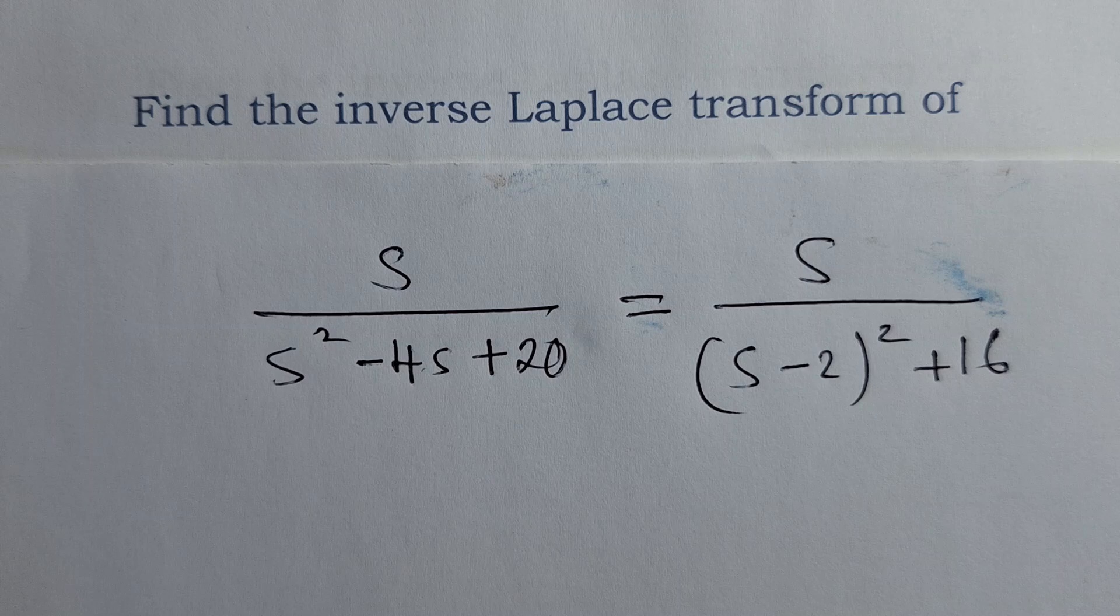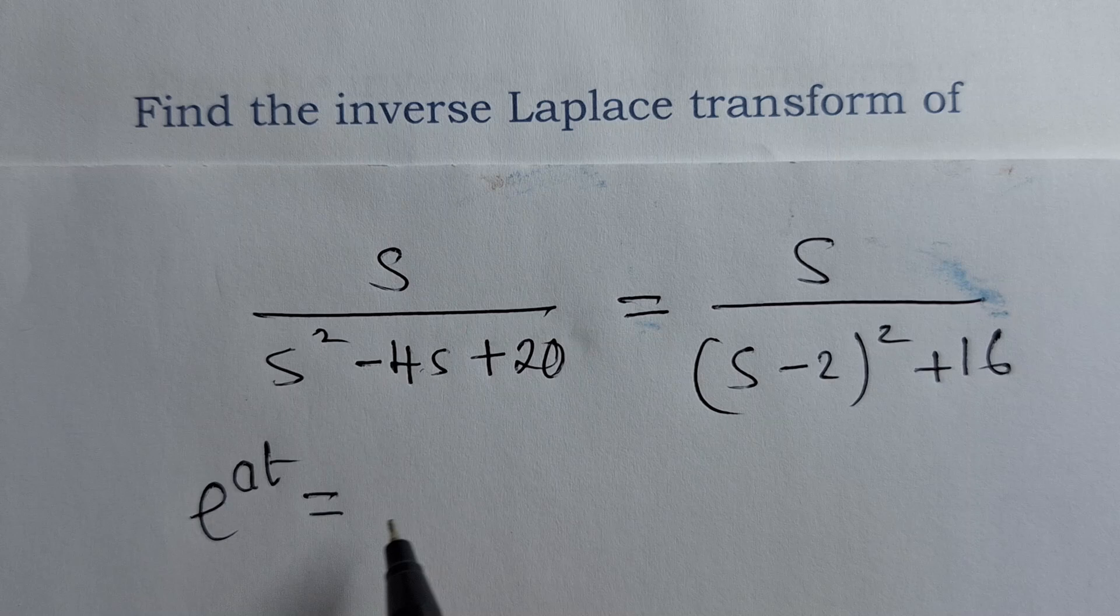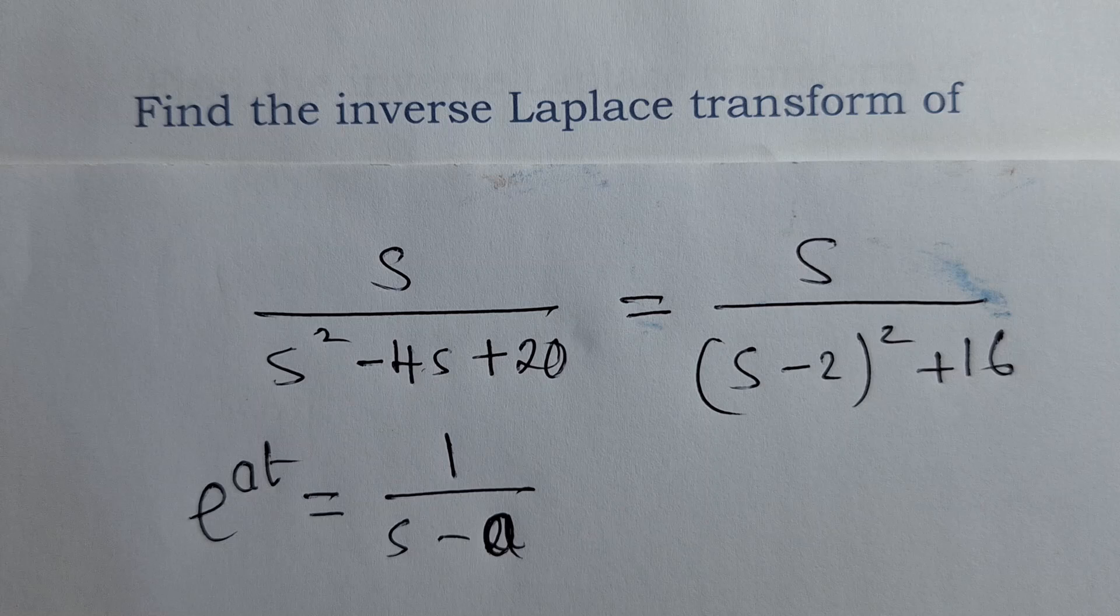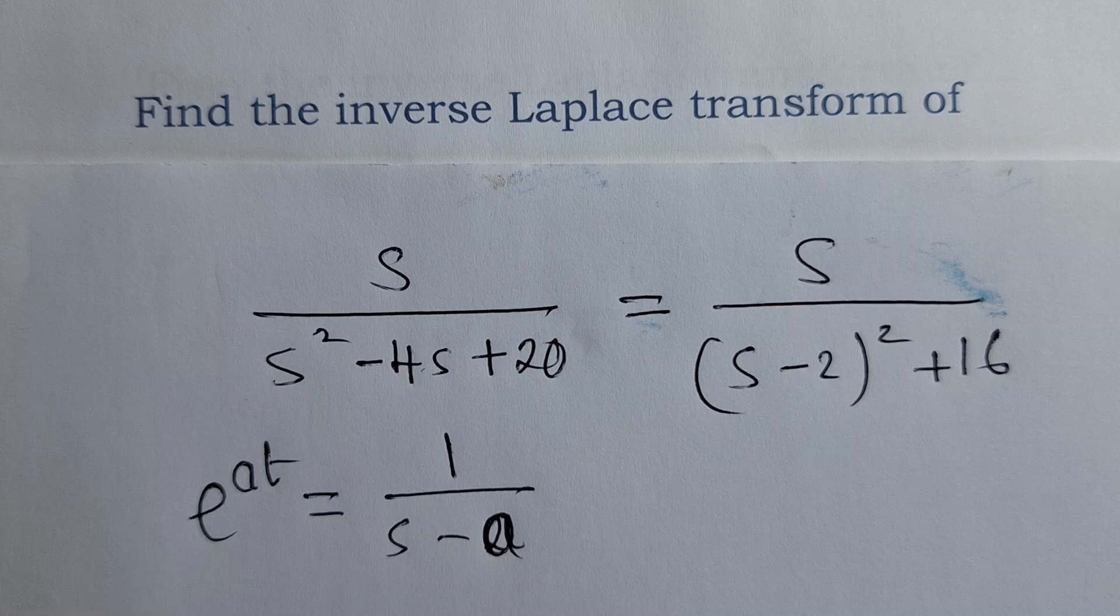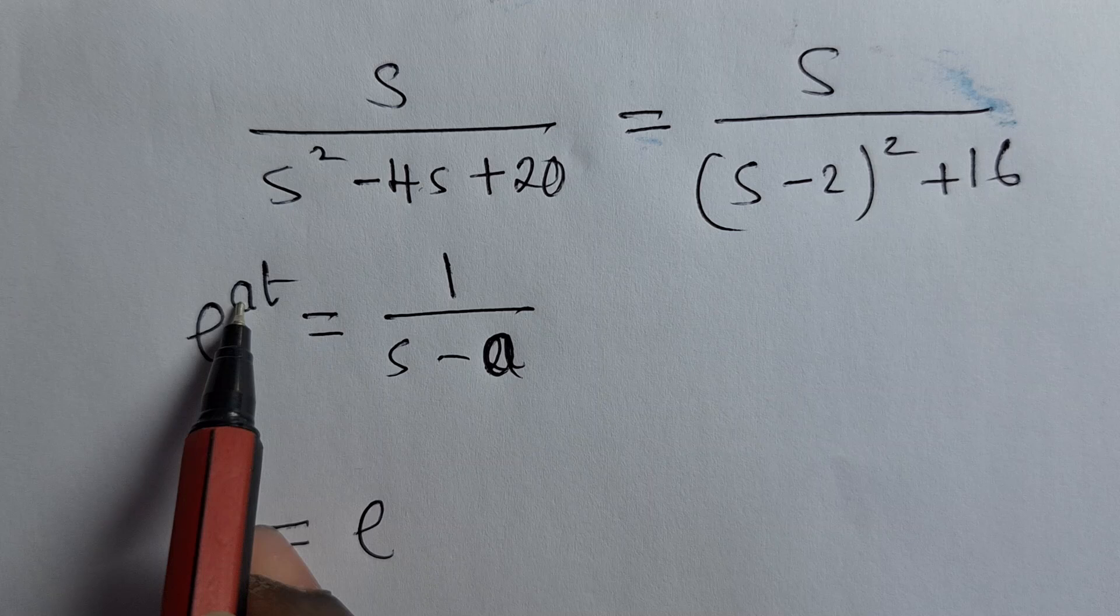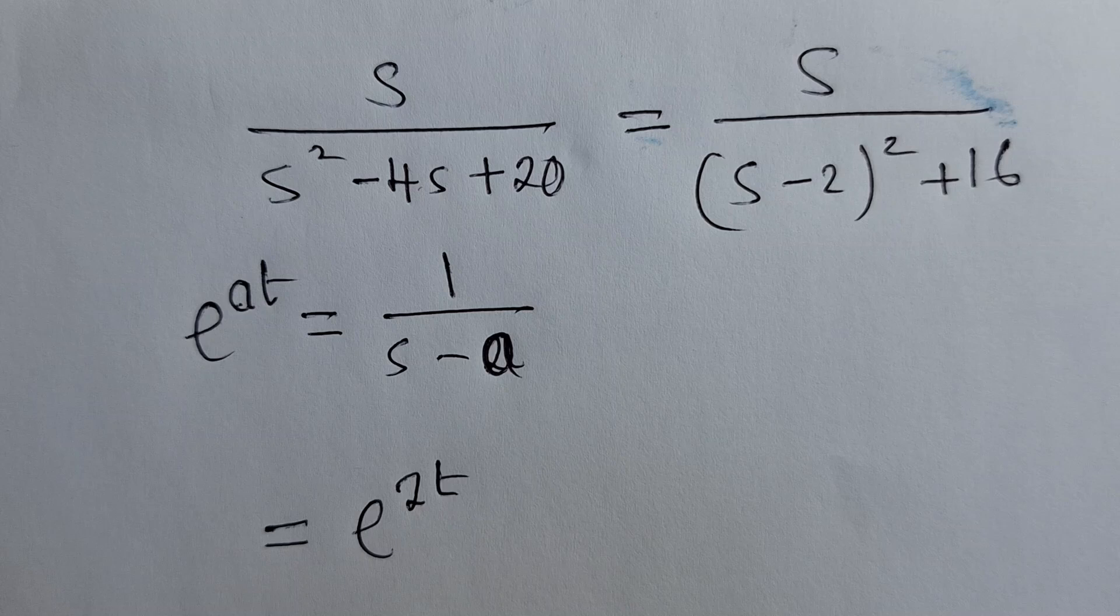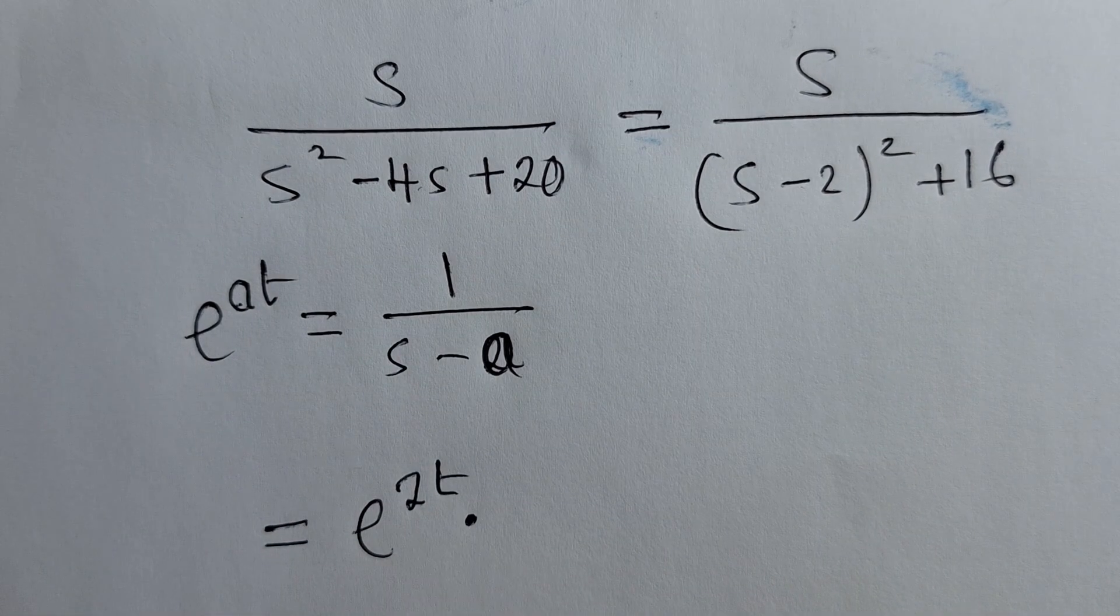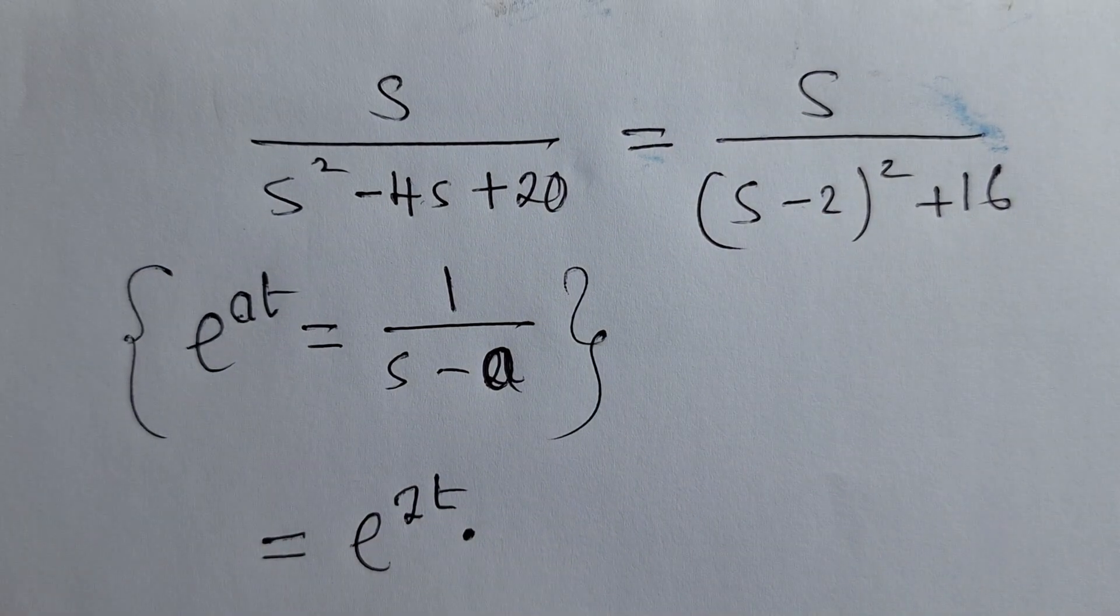the properties we discussed about. There is that property which says that when you've got e power at, this will simply be equal to 1 over S minus a. Minus a. And if you can see nicely here, when you've got a denominator here like this, just know that this will be applied. It will be applied. So we can say equal to e, where there's a here, you see, where there's a, you put a 2. So it will be 2t. From here you get this 2t. And then multiplied by. Next, I want you to understand, I'm writing these properties here so that you understand what is happening.